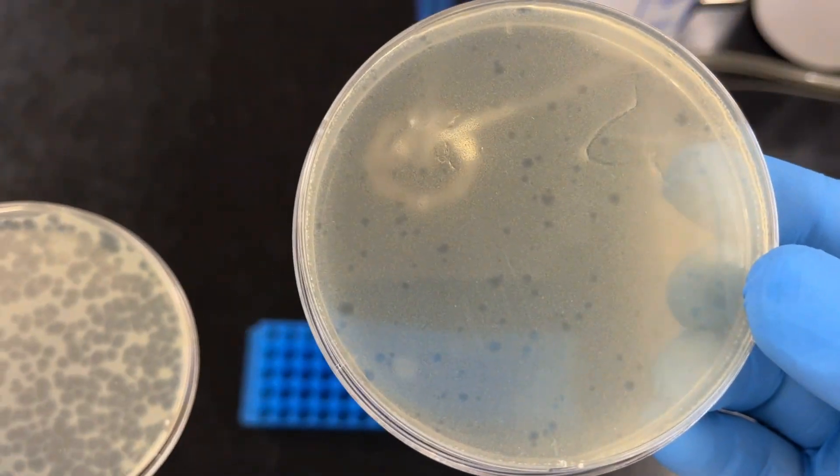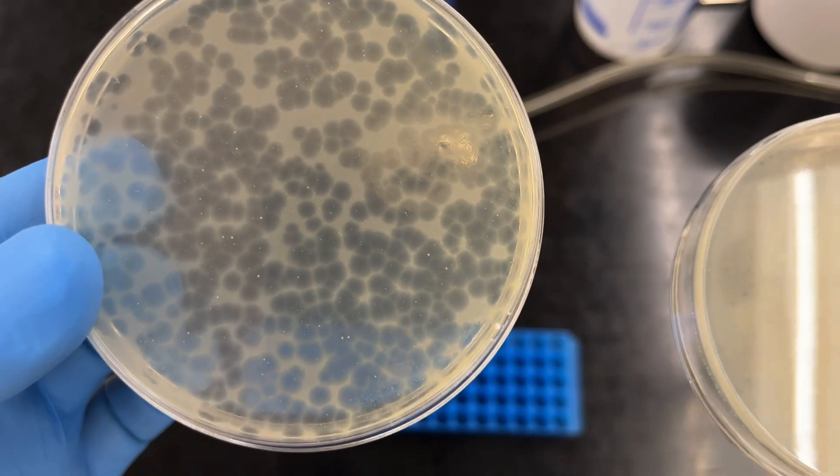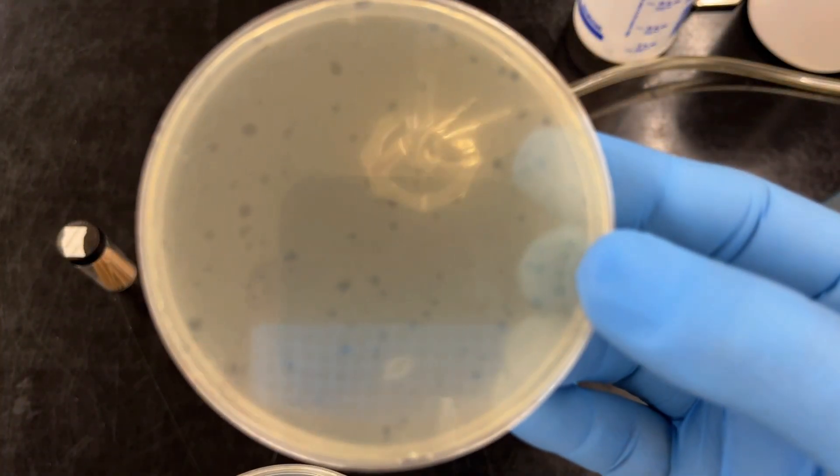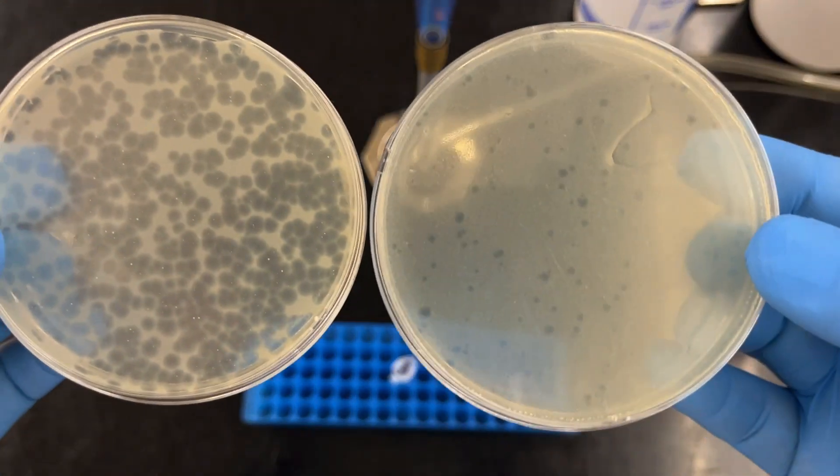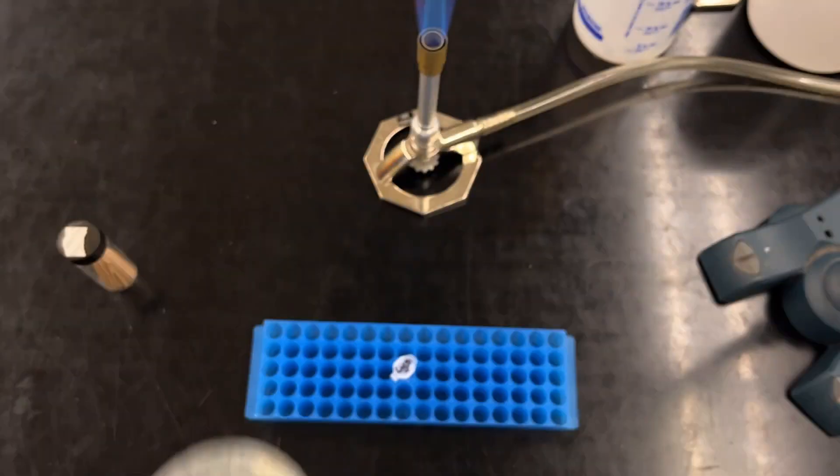And these little holes are what we call plaques, or basically holes in the growth of the lawn. And each plaque represents where a virus has infected and then ultimately burst the cell to create these clearings.